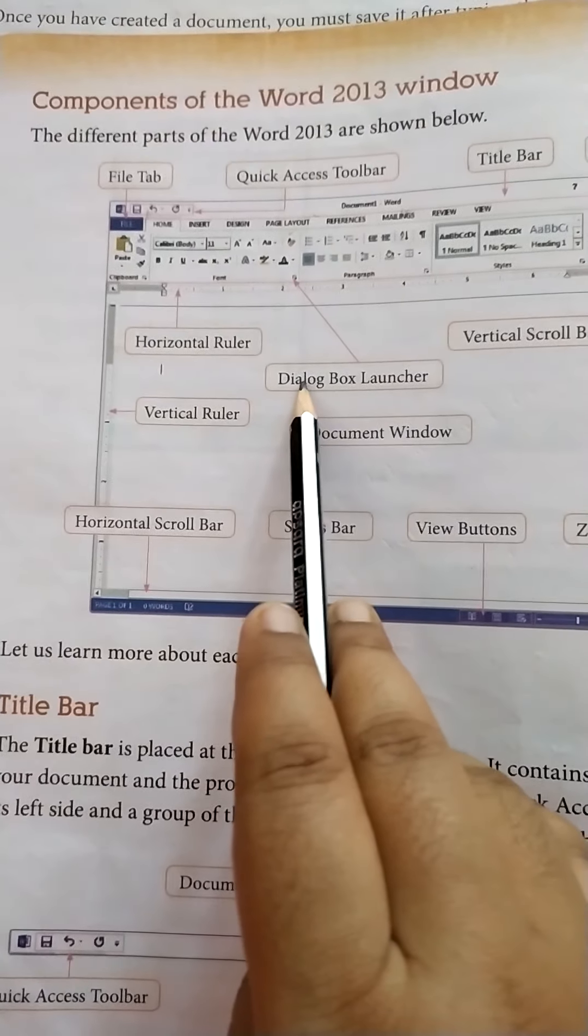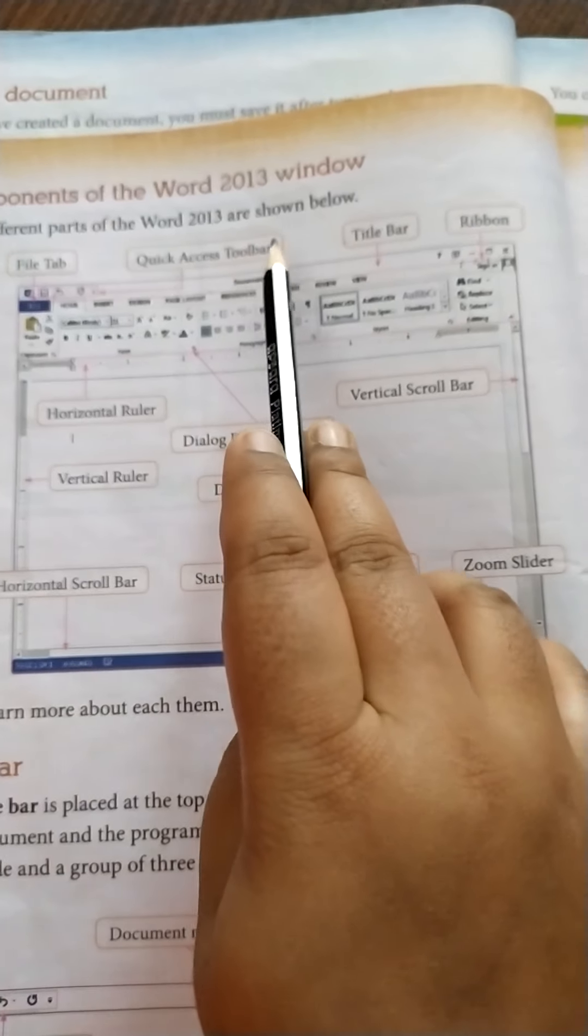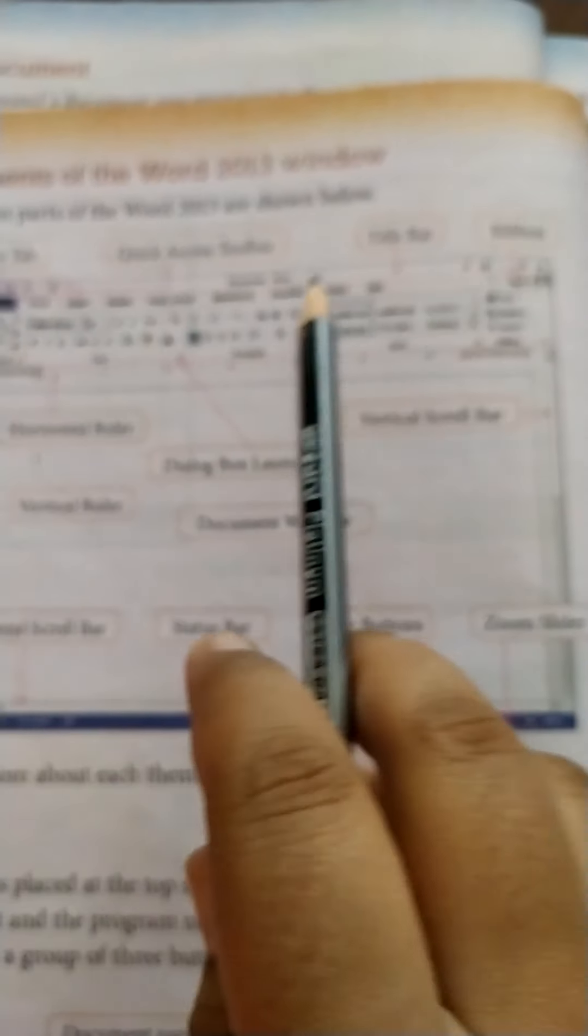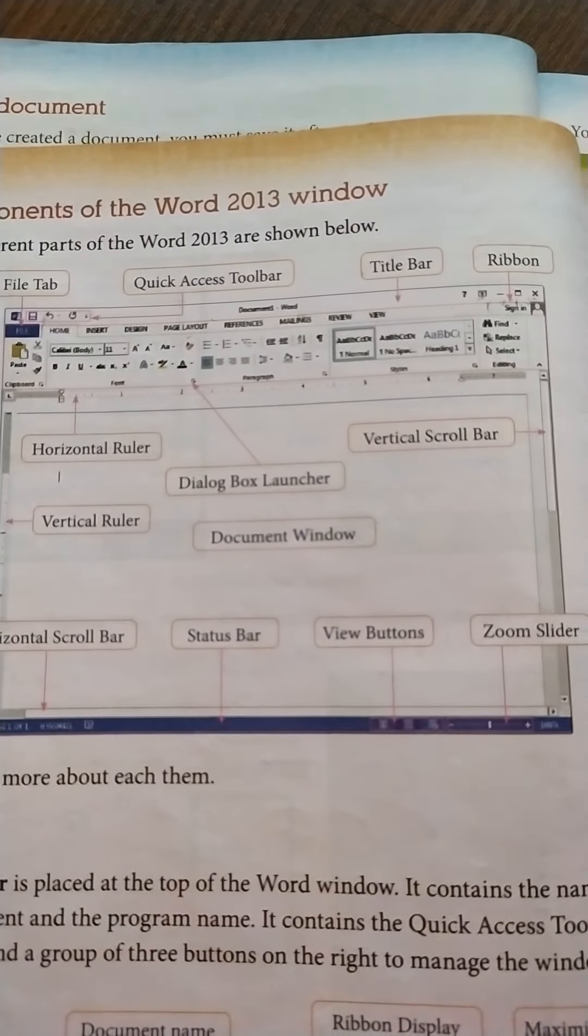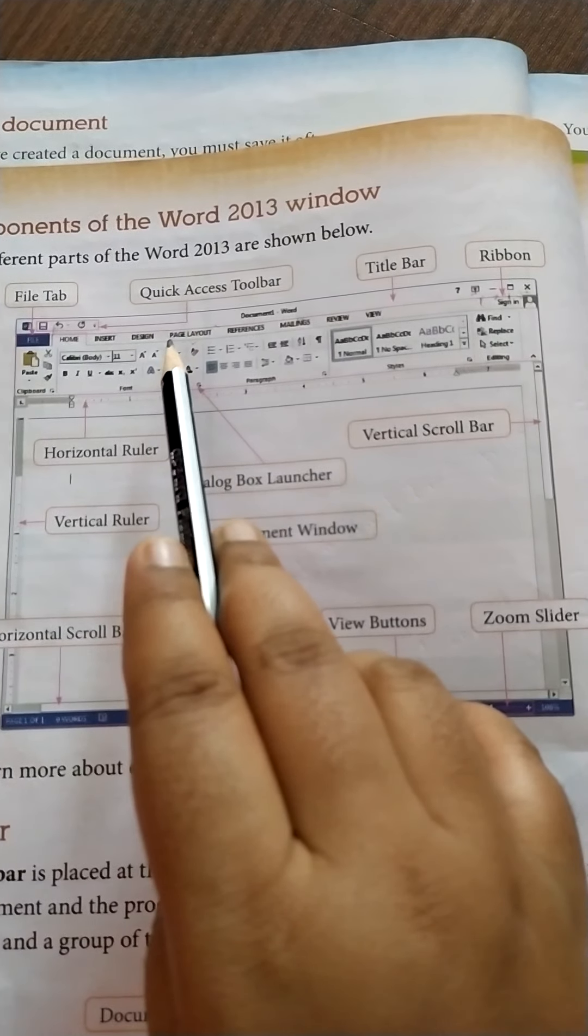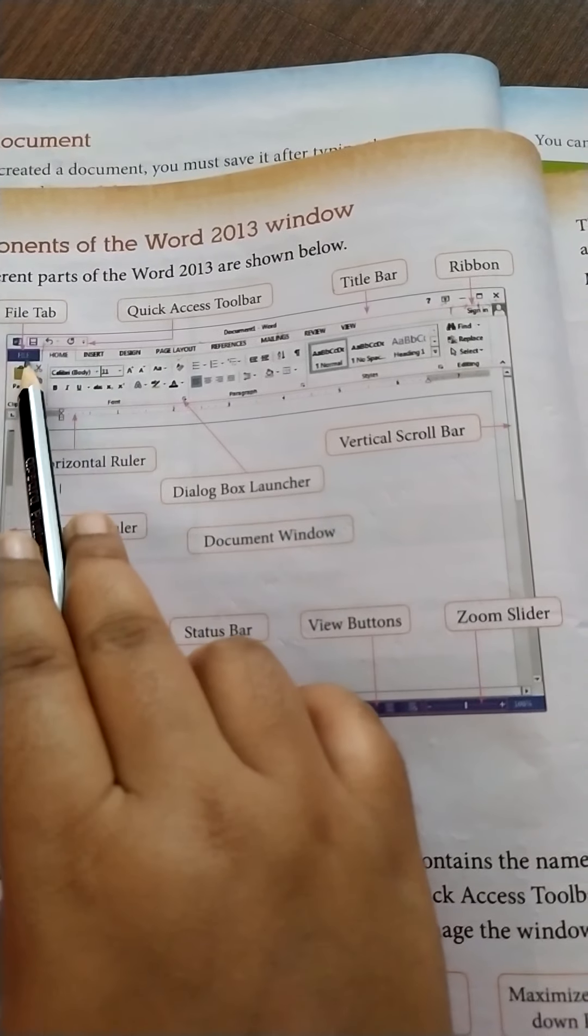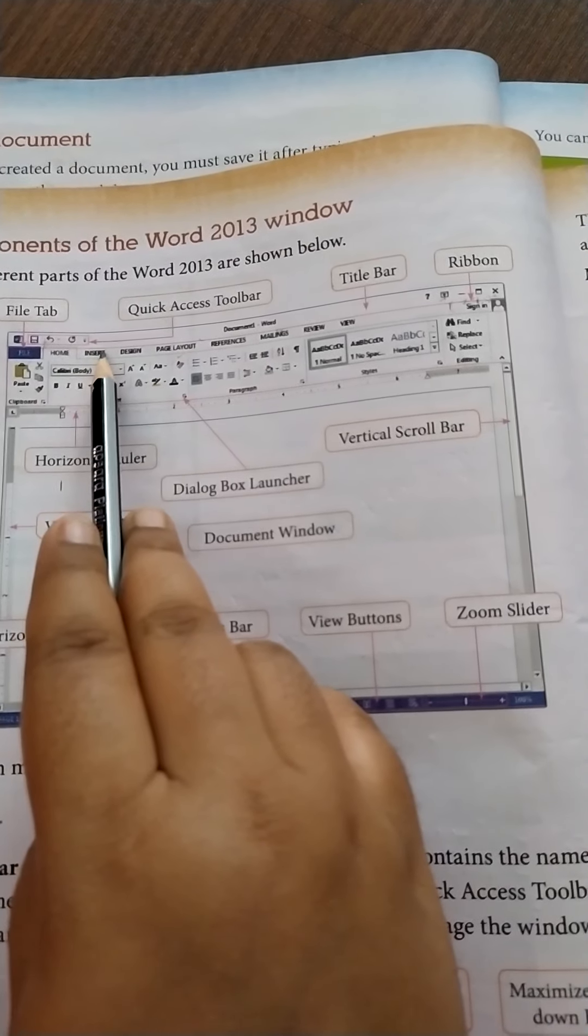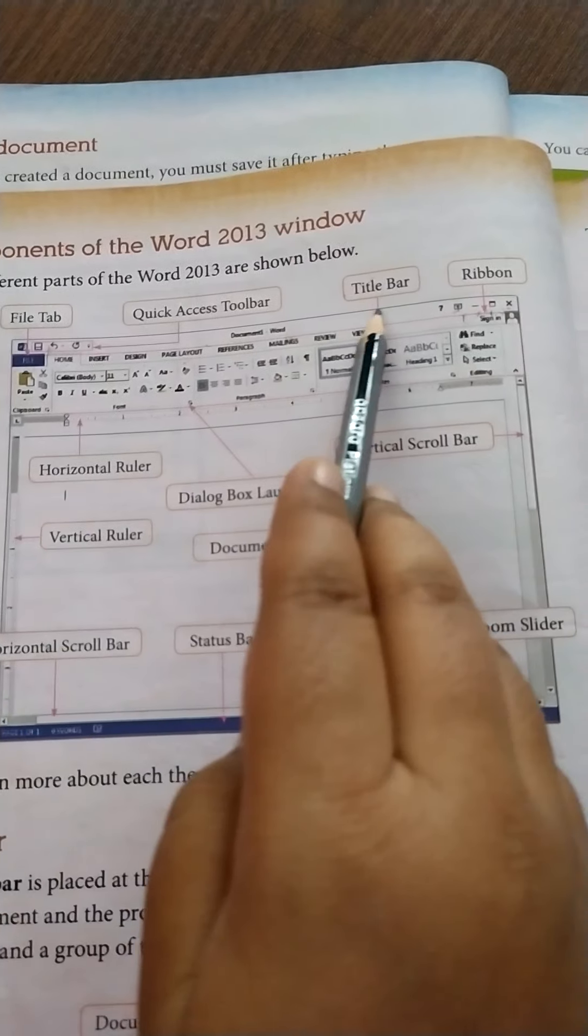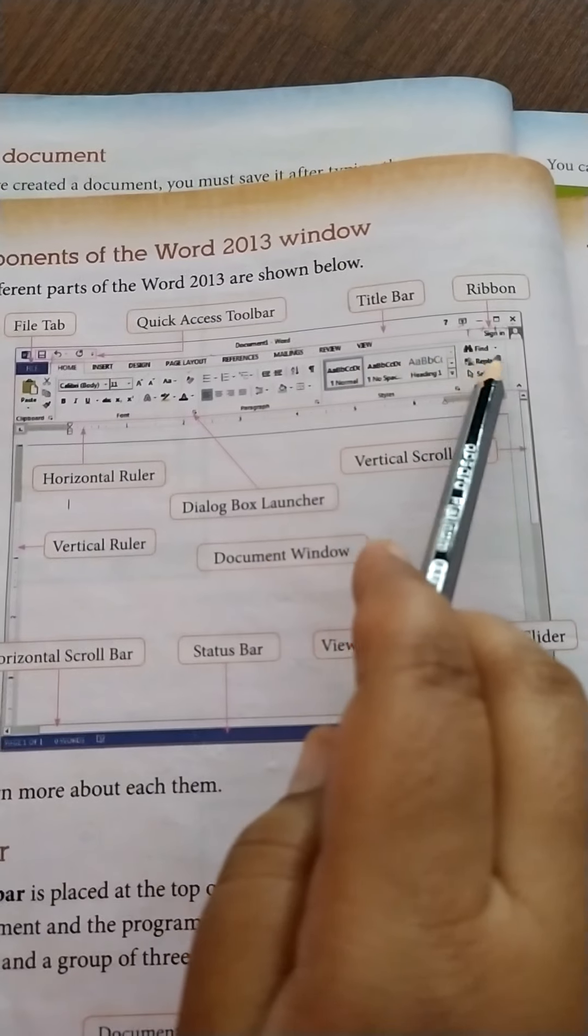Next we have the ribbon. Now this ribbon lies just below the title bar. This ribbon consists of different tabs. You can see file tab, home tab, insert tab, design tab. Different tabs are there. And each tab is divided into different groups.